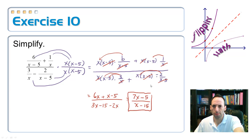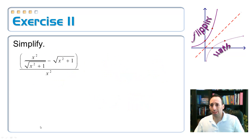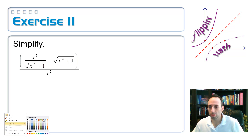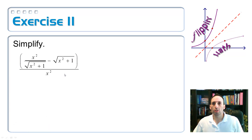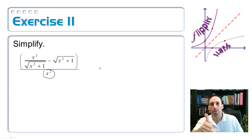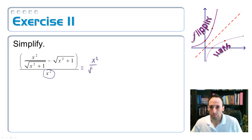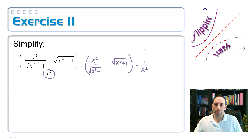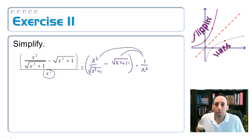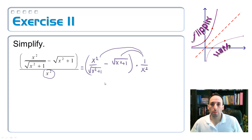Let's try another one — a more challenging complex fraction pulled from challenge problems. I'm going to turn this into a division problem by multiplying by the reciprocal, because there's only one thing on the bottom. Dividing is the same as multiplying by the reciprocal. So this equals: x² over √(x²+1) minus √(x²+1), all multiplied by 1 over x². Distributing: on the first fraction, x² over x² cancels, leaving 1 over √(x²+1).